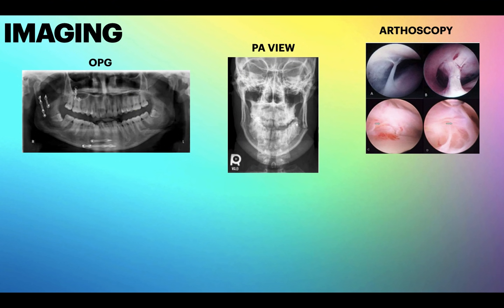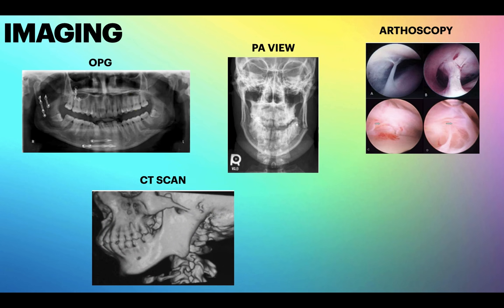Arthroscopy is the most advanced technology available to look into the joint space inside the capsule — even microscopic structures can be seen. CT scan: any bony pathology, and the 3D extension of the pathology, can be easily appreciated with CT scan. CT scan is the gold standard for bony pathology.